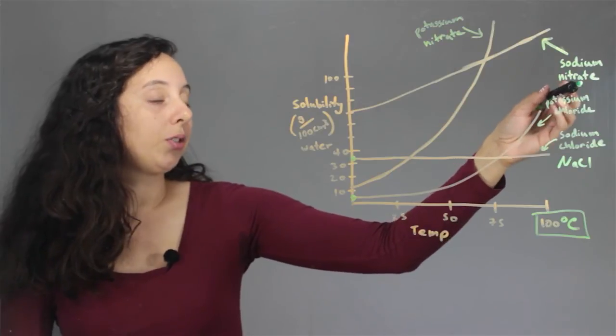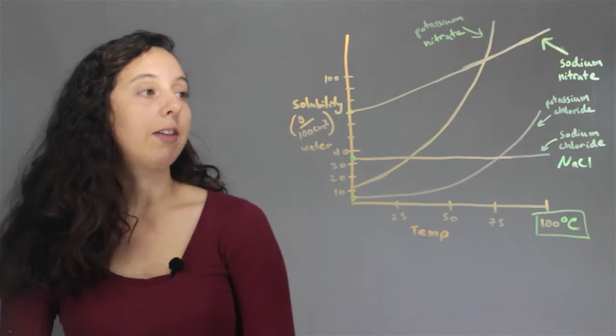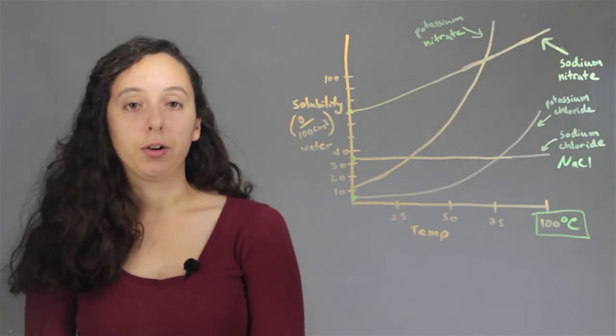And so a couple more. Sodium nitrate. This starts way higher, all the way at 70 grams per 100 centimeters cubed and it rises.